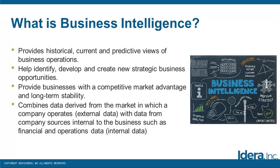Common functions of business intelligence technologies include things like reporting, online analytical processing or OLAP, data mining, process mining, event processing, business performance management, benchmarking, and text mining. BI can be used by enterprises to support a wide range of business decisions ranging from the operational to the strategic. Operational decisions include things like product positioning, pricing, or whether to ramp up manufacturing, whereas strategic decisions involve priorities, goals, and directions at a broad level. When we combine external and internal data, it can provide a complete picture of the business — that's where the intelligence gets created.